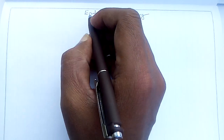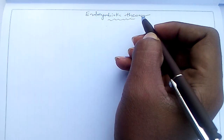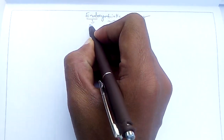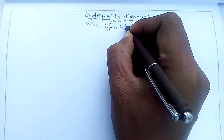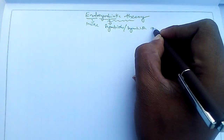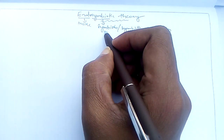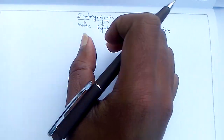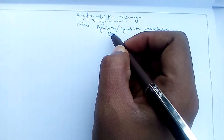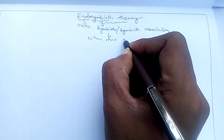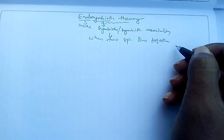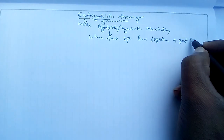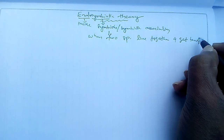Our topic is endosymbiotic theory. Endo means inside, and symbiotic comes from the word symbiosis or symbiotic association. Symbiosis means when two living organisms live together and both are benefited from each other — when two species live together and get benefits from each other.